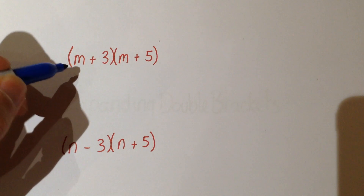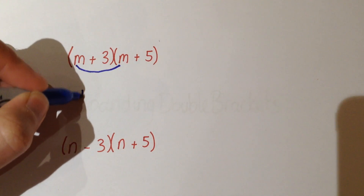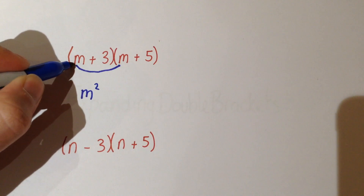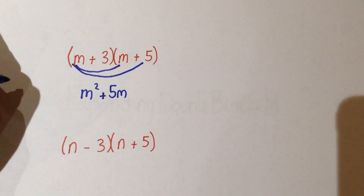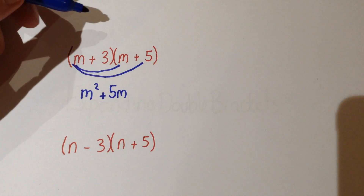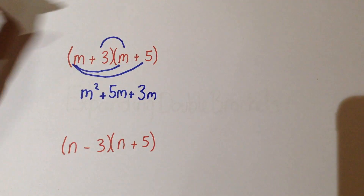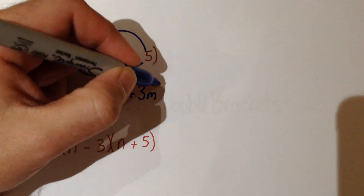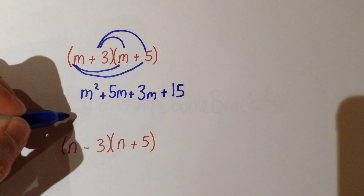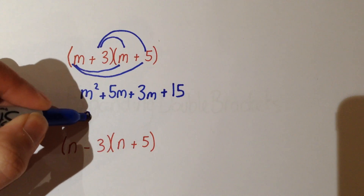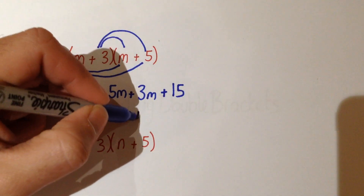I prefer something that I call the crab claw method. So we would need to multiply together m by m, which gives us m squared. We then multiply m by positive 5, giving us plus 5m. We now multiply the 3 by both bits in the second bracket: positive 3 times m gives us plus 3m, and positive 3 times positive 5 gives us plus 15. To get a second mark we would then simplify — there's only one m squared term, and 5m plus 3m gives us 8m, plus 15 at the end.